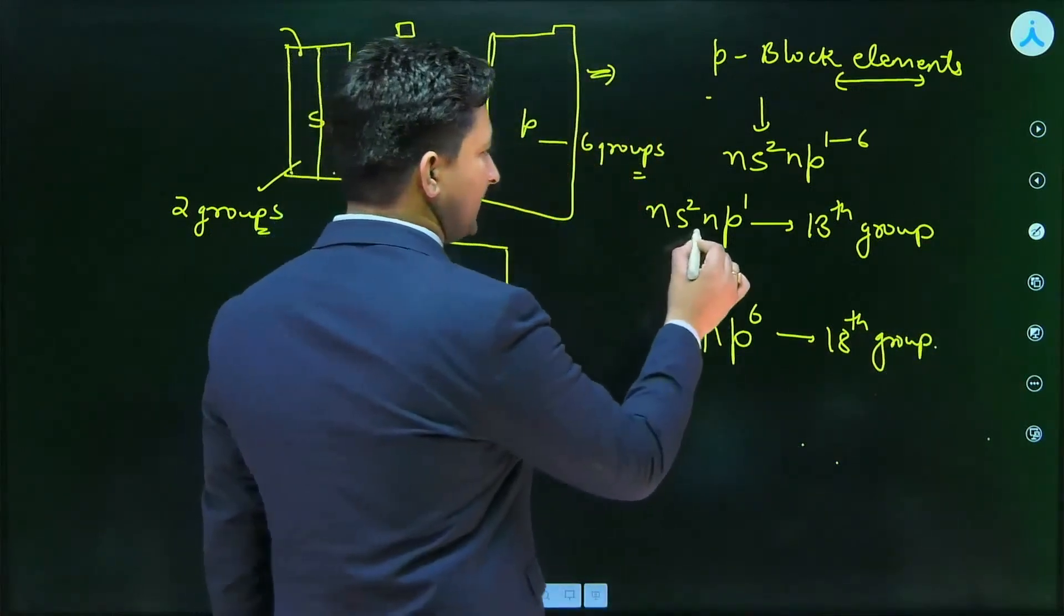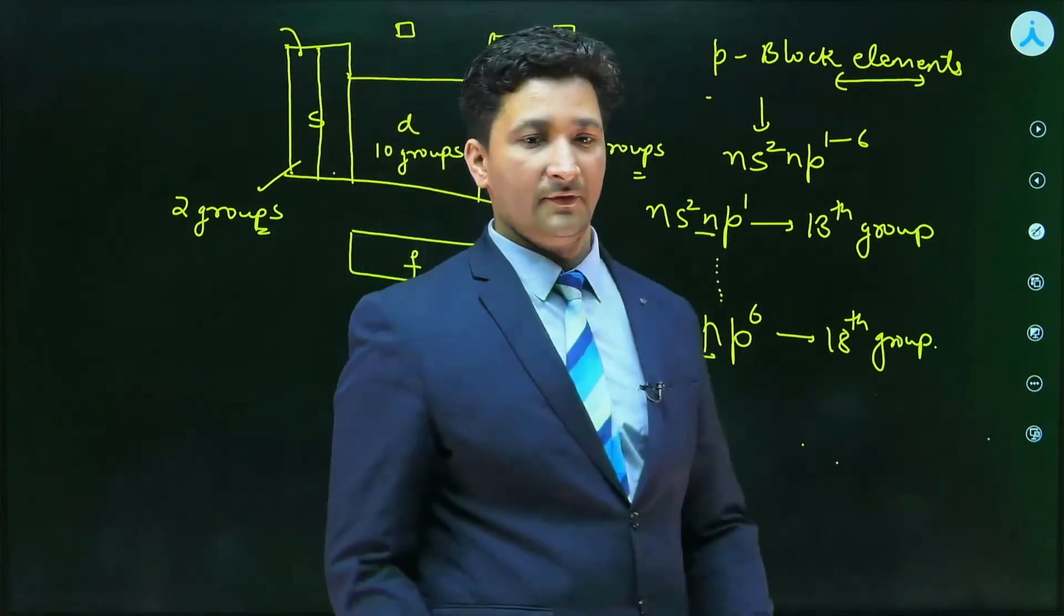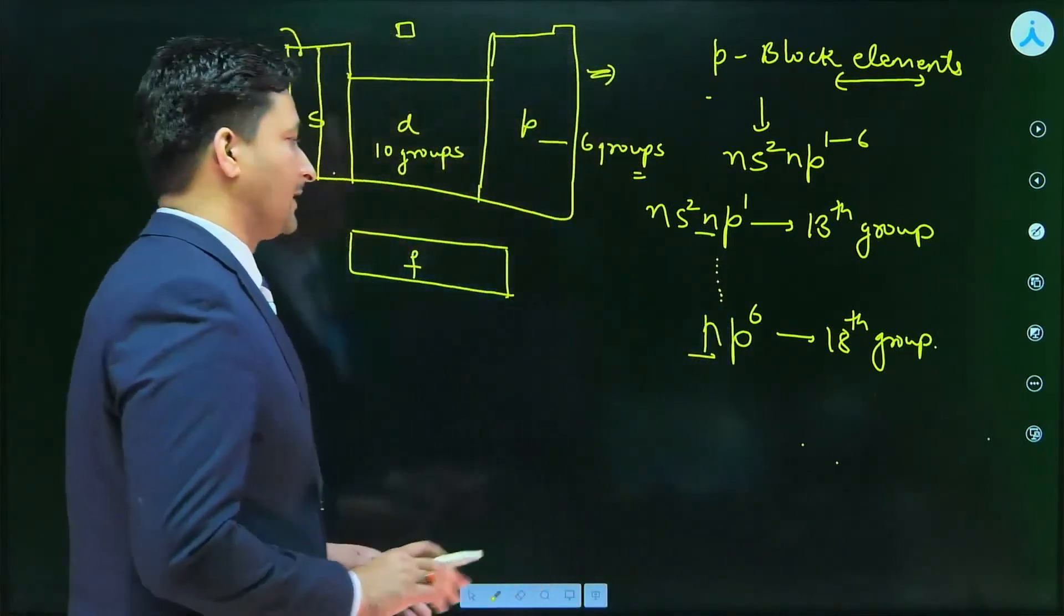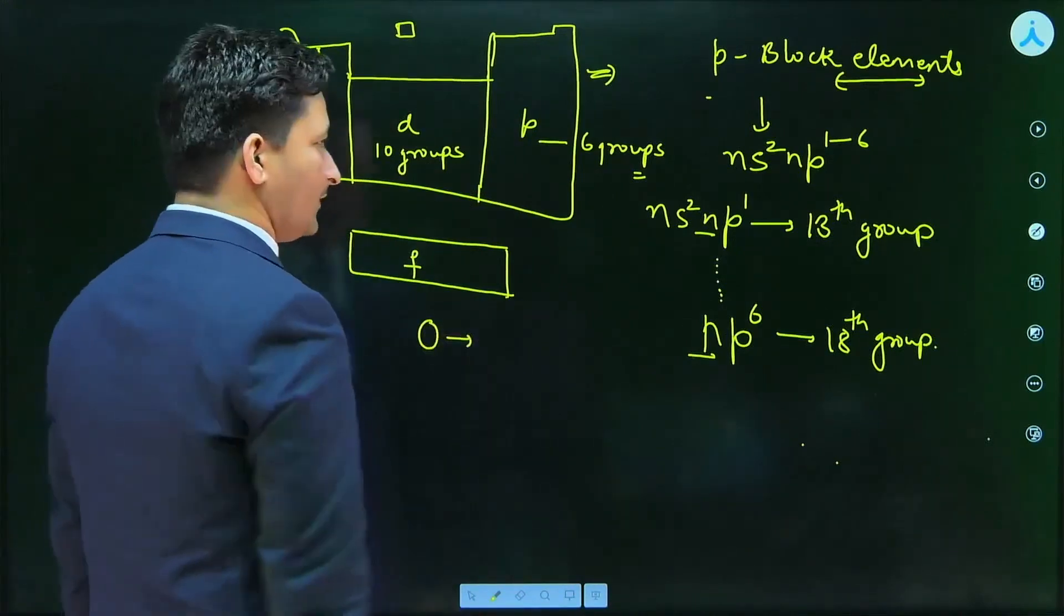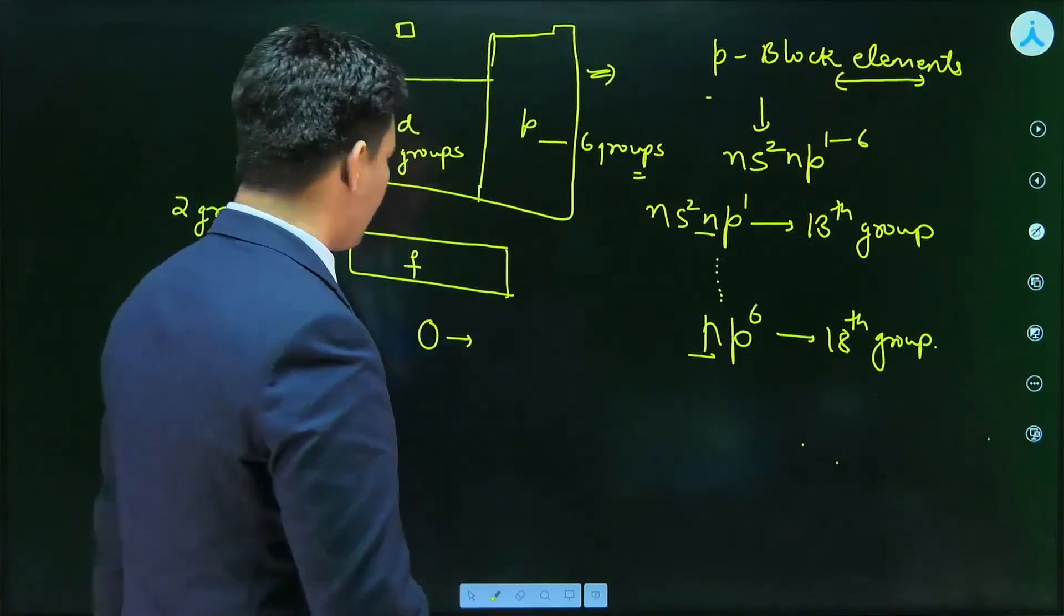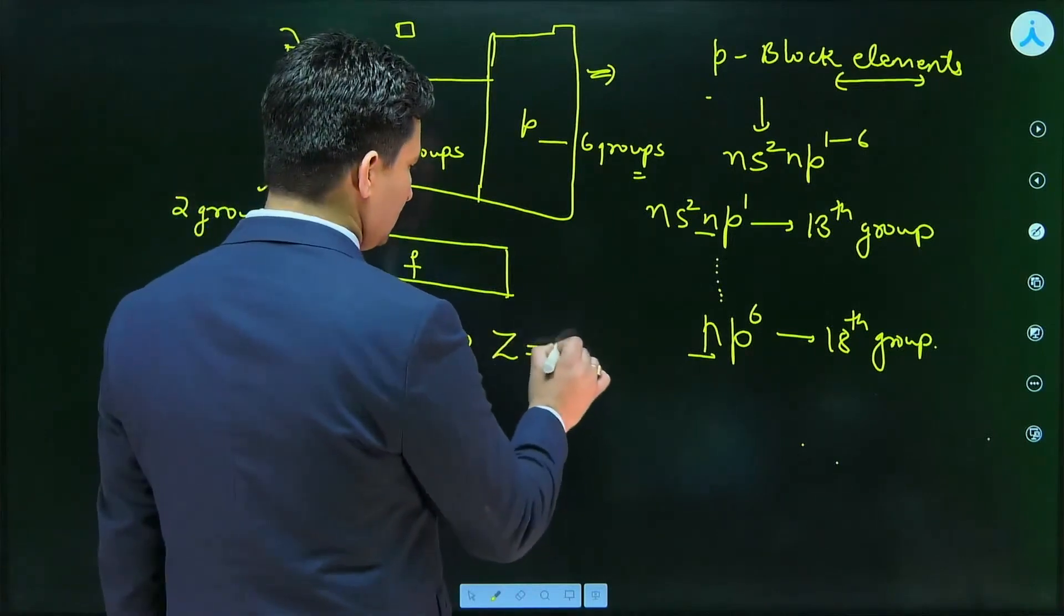And maximum value of n represents the respective period. Is this clear to all of you? Now, let us take an example. Suppose I am talking about oxygen. What is the atomic number of oxygen? It's Z is equal to 8.